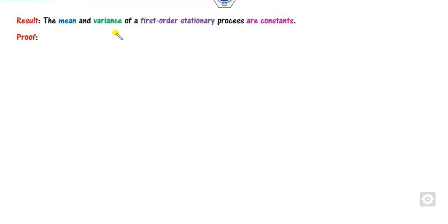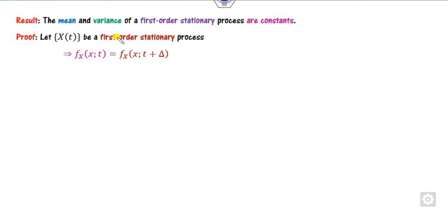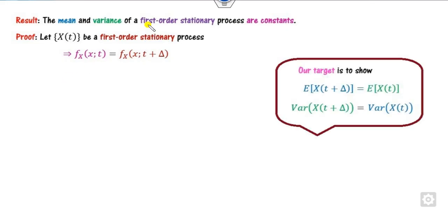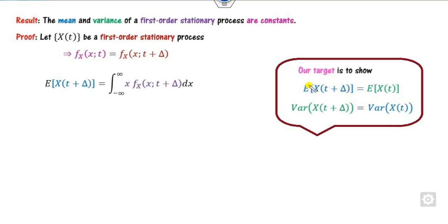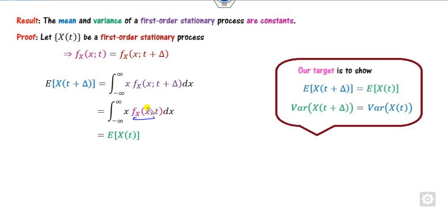For example, first you have to prove that the mean and variance of the first-order distribution — consisting of only one variable — are constants. Given a first-order stationary process, by definition the distribution is time-invariant. Your target is to prove whether the mean is constant with respect to time. Starting from the left-hand side, for a continuous variable take an integral; for discrete, take a summation. Using equation (1), the expected value of the random process is obtained.